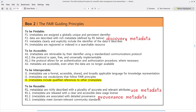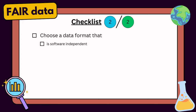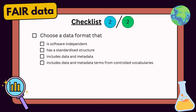Principle I3 is that data or metadata include qualified references to other data or metadata. You can include within your dataset references to any other datasets — or any other publication — that you've used to help create your dataset. So let's add another item to our checklist: choose a data format that is software independent, has a standardized structure, includes data and metadata within it, has data and metadata terms taken from controlled vocabularies, and the standards should be well documented and also maintained — so you'll have confidence that people will still be using that standard in the future.